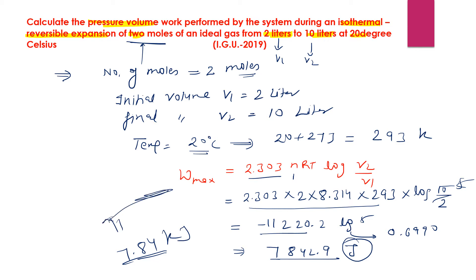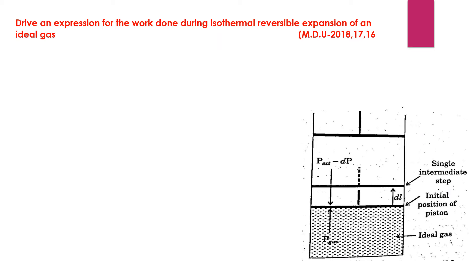The next question asks to derive an expression for work done during isothermal reversible expansion of an ideal gas. Work done W is to be found when the system undergoes isothermal reversible expansion — isothermal means temperature is constant, and reversible means the rate of forward reaction equals the rate of backward reaction. During expansion, the gas expands and the system does work.